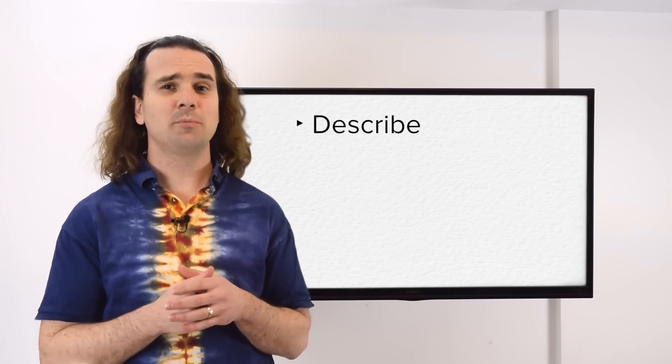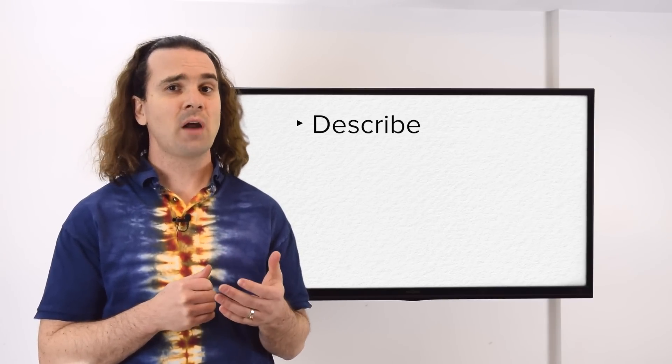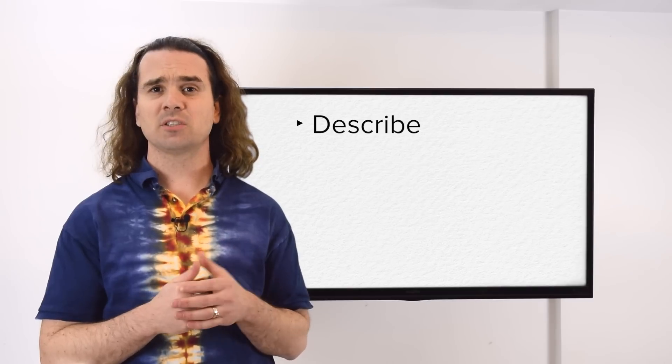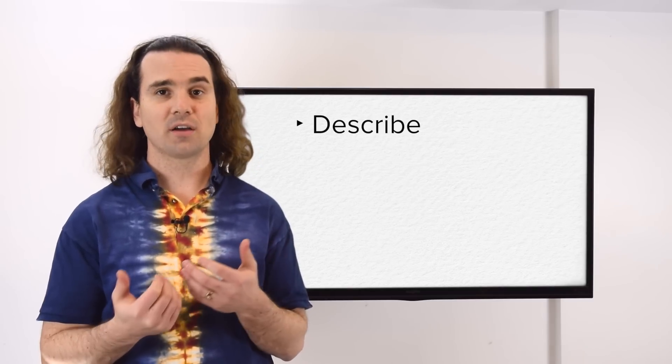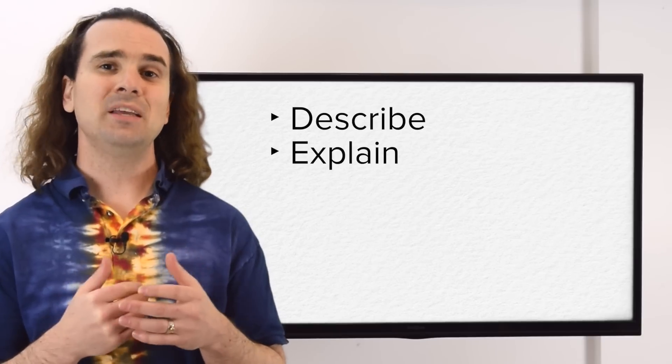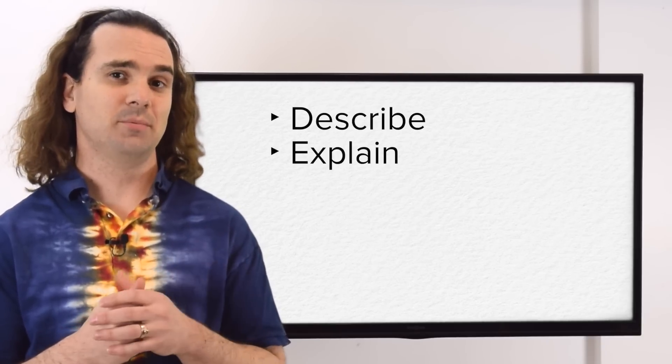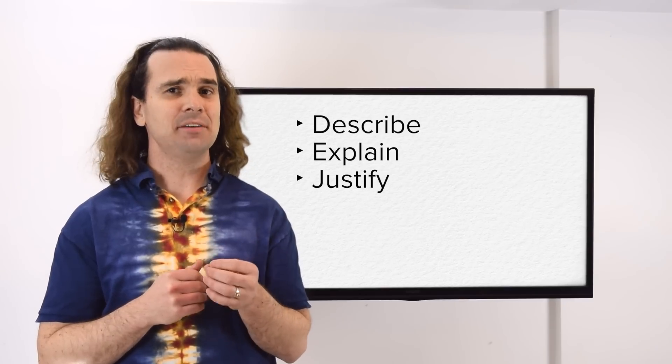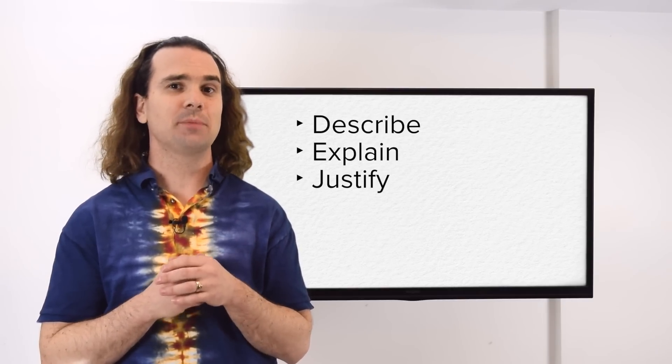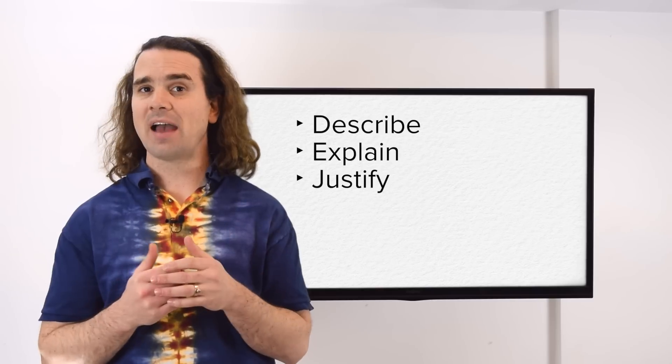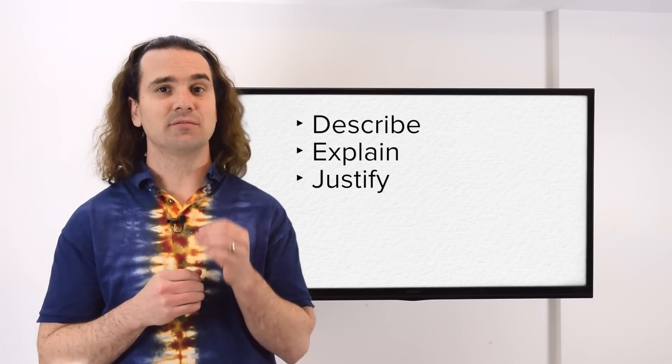There are specific terms you need to be familiar with. Describe means you need to show you understand the underlying physics principles in a situation or event. Explain means you need to provide evidence which clarifies what you just described. Justify means an evidence-based argument to support a previous answer. You will likely include equations and refer to graphs, but you need to write in full sentences.